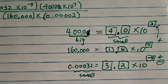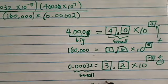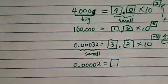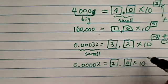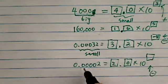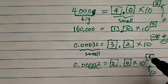And one more to go, zero point zero zero zero zero two. So that's going to equal to two point zero times ten to the, it should be a negative, right? One, two, three, four, five, so negative five.